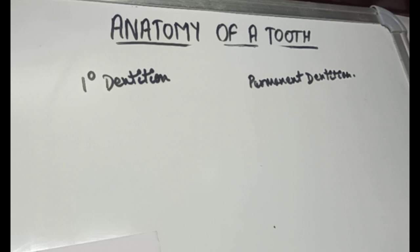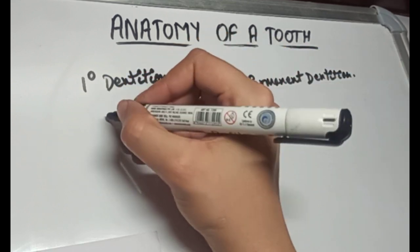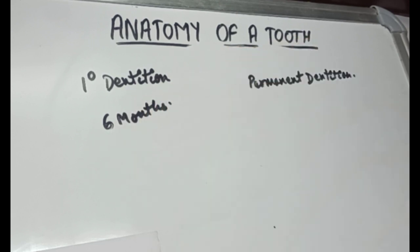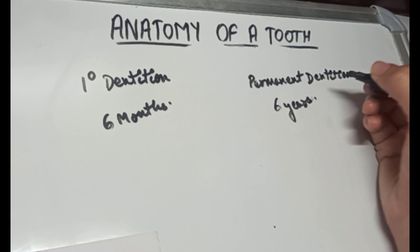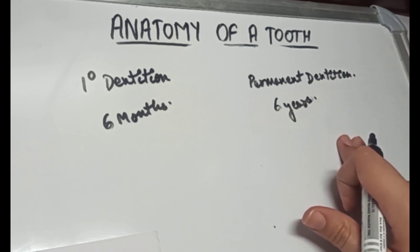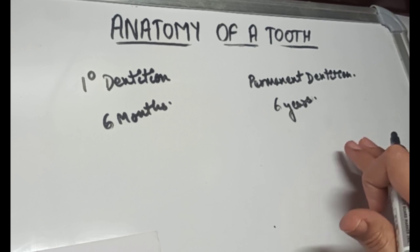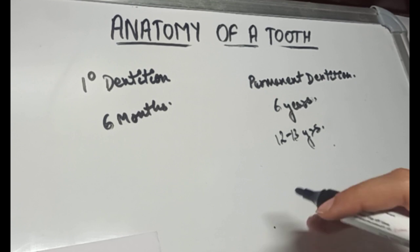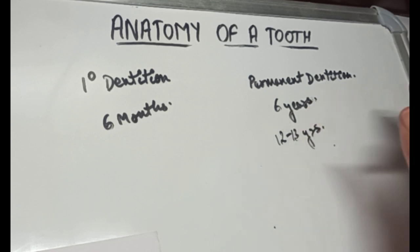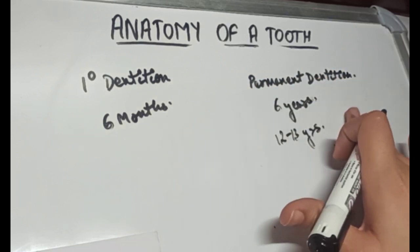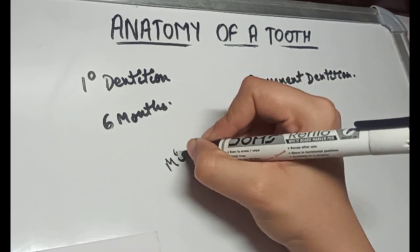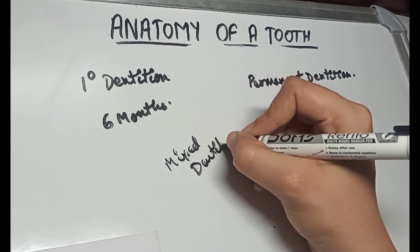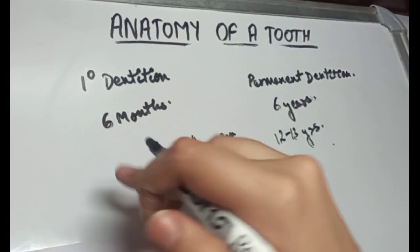We get two sets of teeth in our lifetime: the primary teeth and the permanent teeth. In the primary dentition, teeth usually start erupting at the age of 6 months. When we are about 6 years of age, the first permanent teeth begin to erupt, and the permanent dentition is completed around the age of 12 to 13 years. Between 6 to 12 years of age we have both dentitions present, so it is called the mixed dentition stage, as permanent teeth are erupting and primary teeth are being exfoliated.